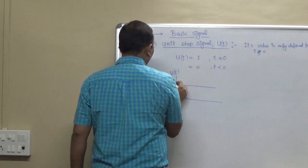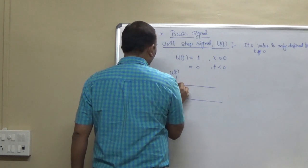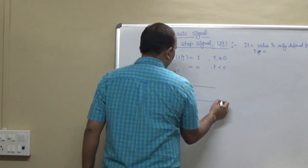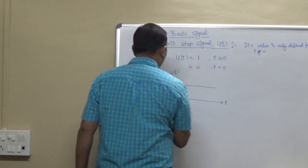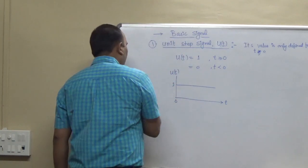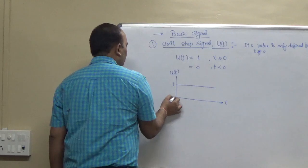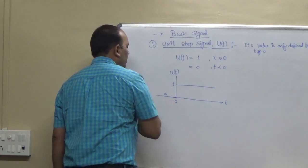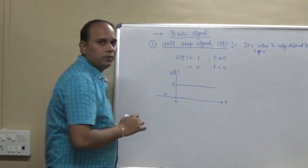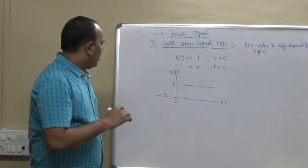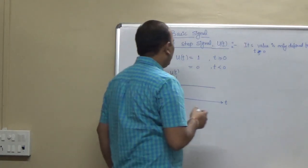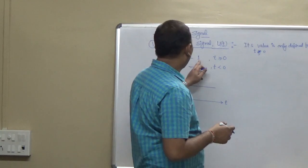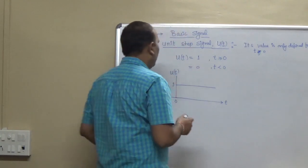This is u(t) and its value is 1 for t greater than 0 in the time domain. For t less than 0, it is 0. This is the unit step function and its amplitude is 1.